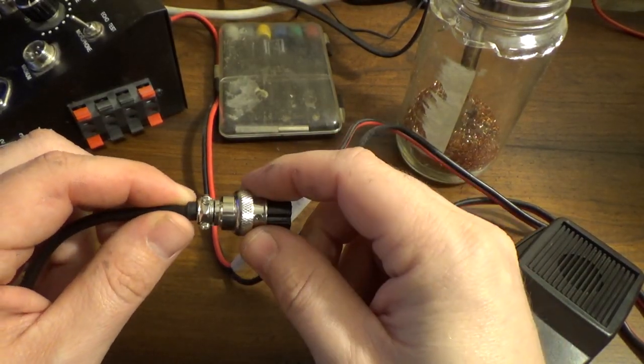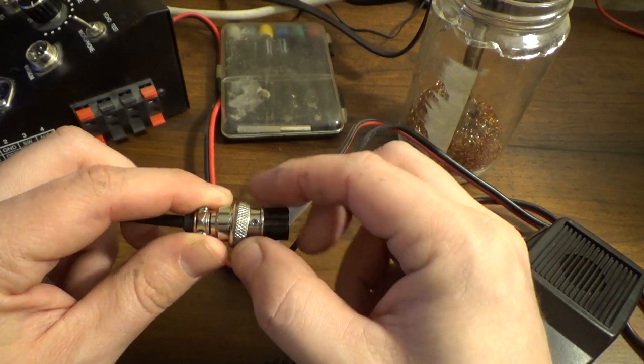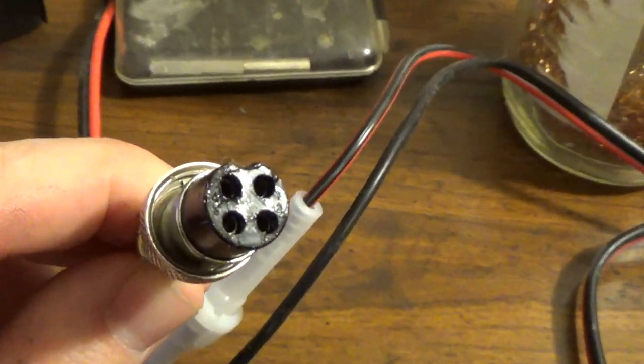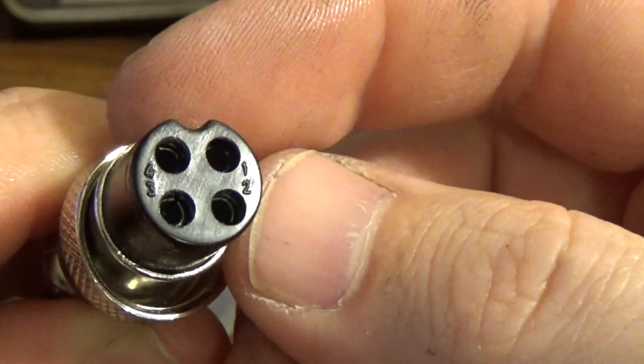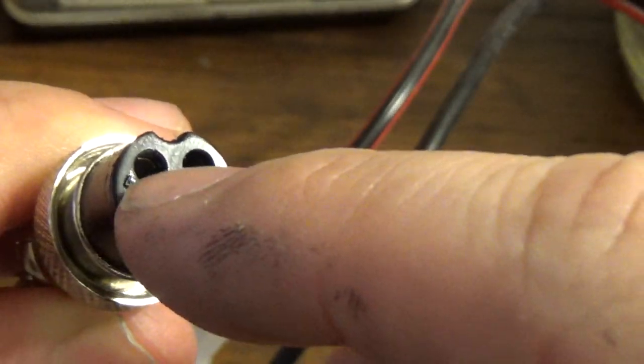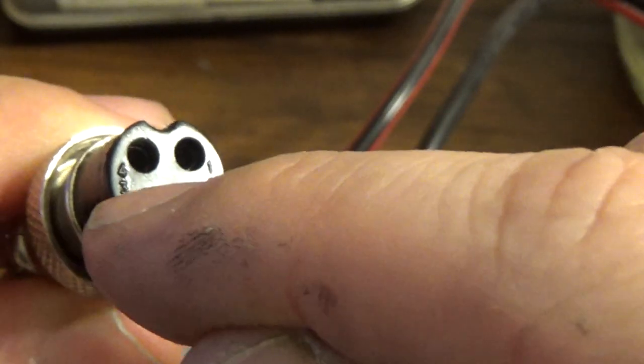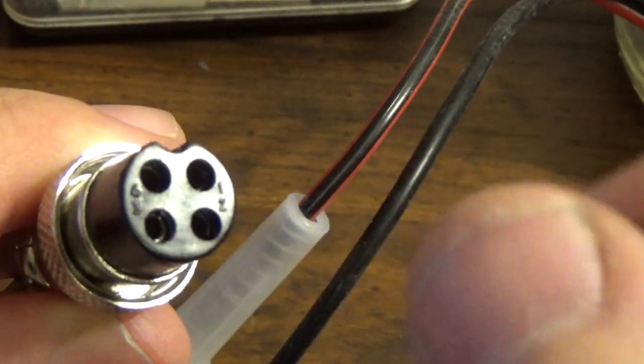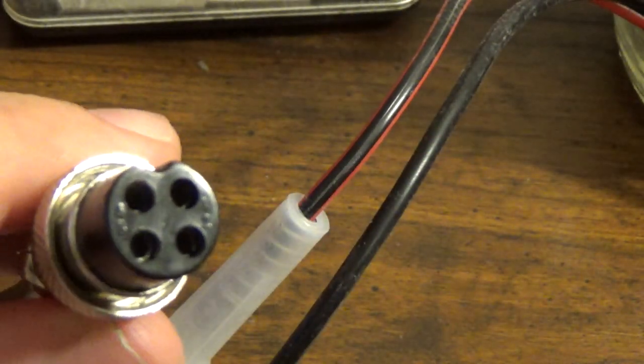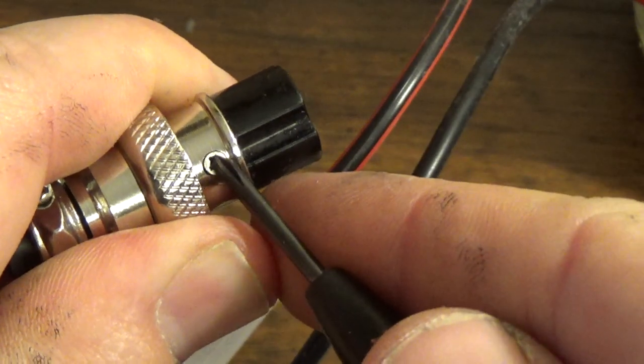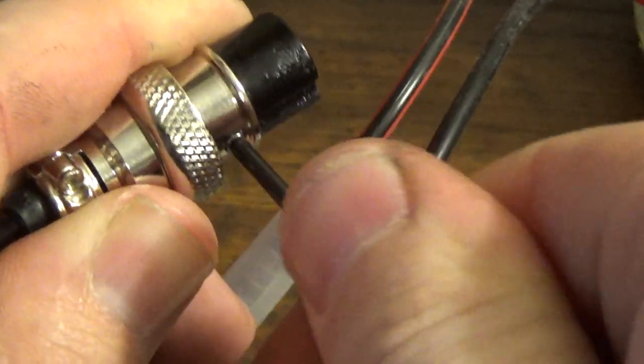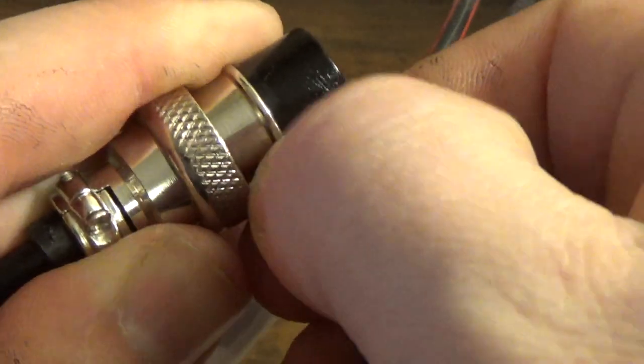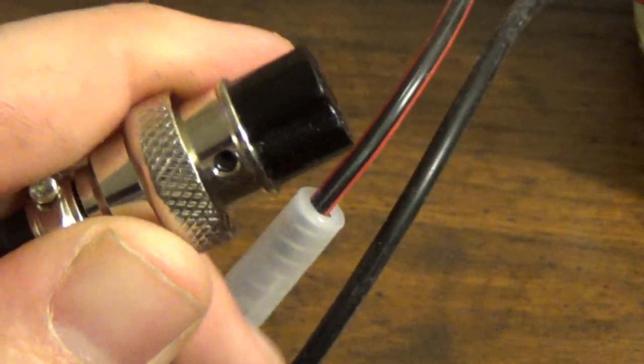Alright, so the first order of business here is just to remove the end connector here and get the wires exposed. You can see here on the end here, I had some grease on there forever ago, that the pins in the connector are labeled 1, 2, 3, and 4. That's going to be how we identify which wire goes to which pin for this to work on a Cobra radio instead of a Midland one.